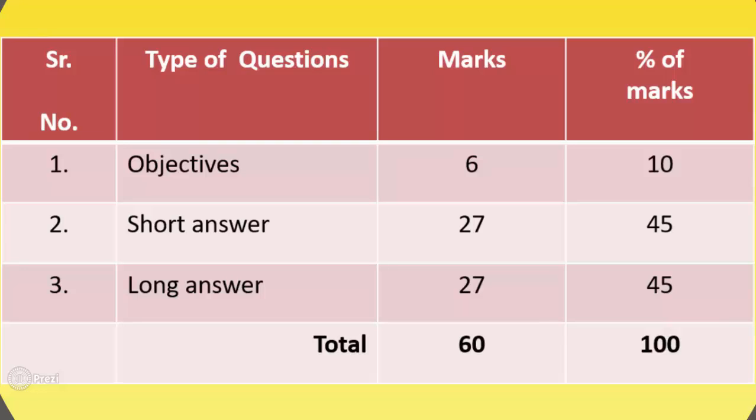The second type of question is short answer. Marks are 27 and percentage of marks is 45. The third type of question is long answer. Marks for long answers are 27 and percentage of marks is 45. So, total marks are 60 and percentage of marks is 100.